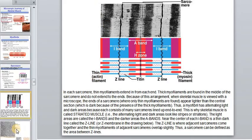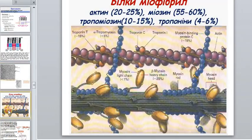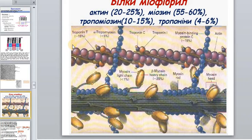Across the section you can see six actin molecules around each myosin molecule. At increased magnification we can see each molecule — the actin and the many proteins which connect with actin and myosin molecules. In a sarcomere, actin makes up 20–25%, myosin 55–60%, tropomyosin 10–15%, and troponin molecules 4–6%.